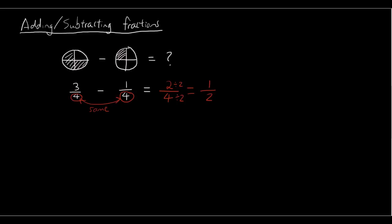Adding fractions works the same way. If we have something like five out of seven plus three out of seven, all you do is keep the denominator the same, so the bottom is still seven. Five plus three is eight, so the numerator — the number at the top — is eight.